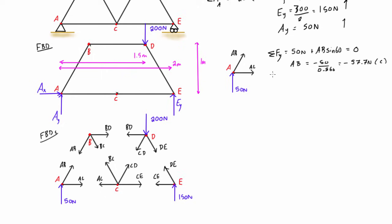Now taking the sum of forces in the x-direction at joint A: we have negative 57.7 newtons — it's pointing in the negative x-direction — so we get negative 57.7 times cos 60, plus AC equals zero. Cos 60 is 0.5, so we find AC equals 28.85 newtons. This positive value tells us AC is actually in tension.